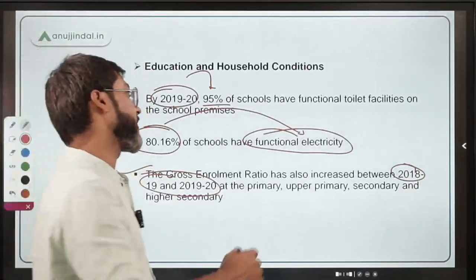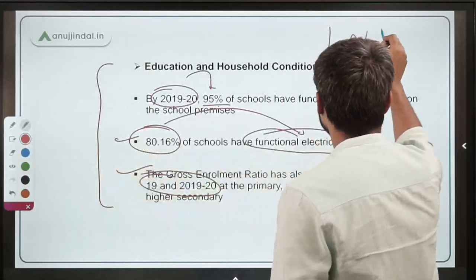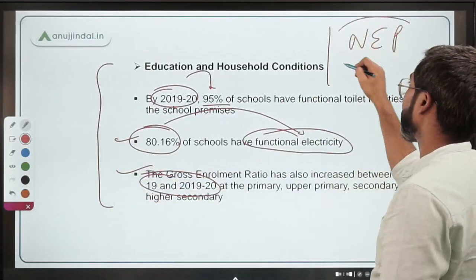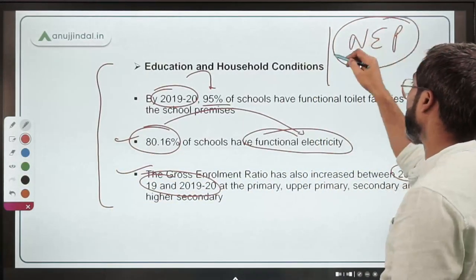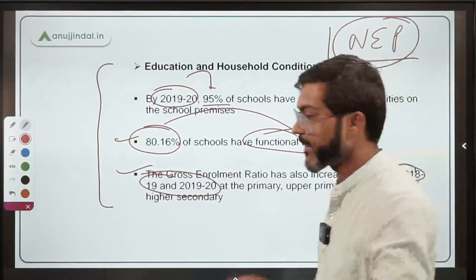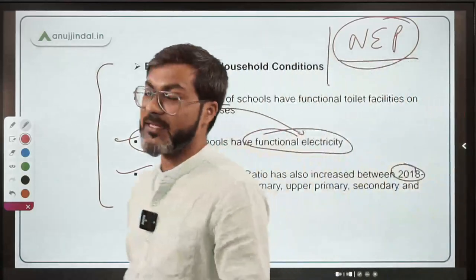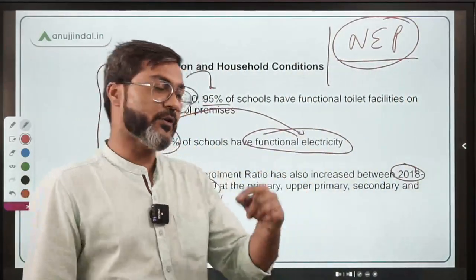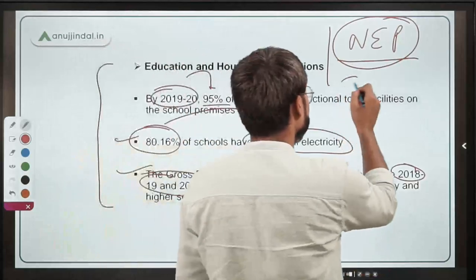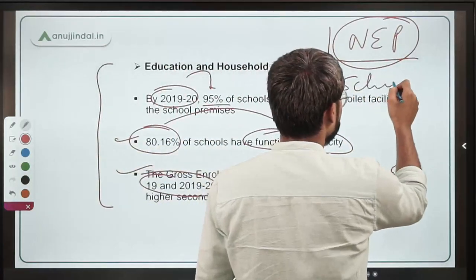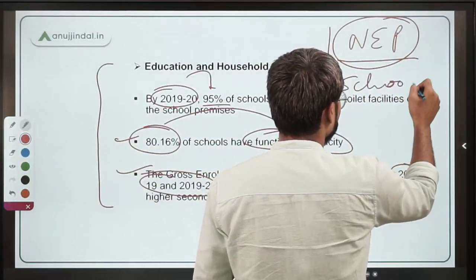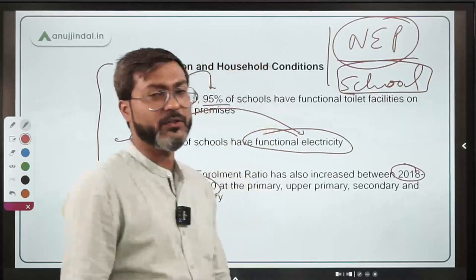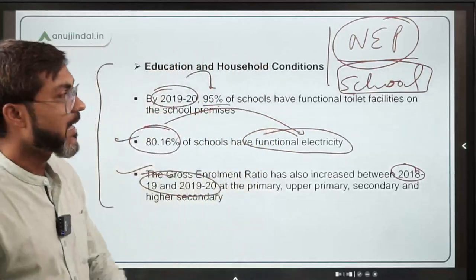I have a question for you all: what is the target of gross enrollment ratio as per the New Education Policy? Write it down in the comments — both for school level and college level. What is the target of GER as per the New Education Policy?